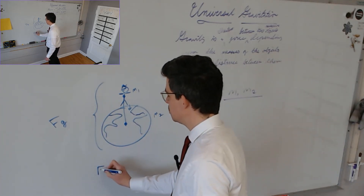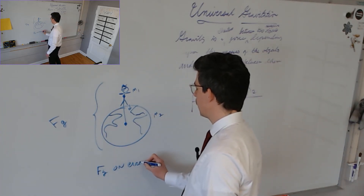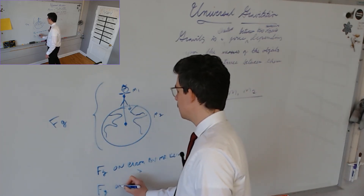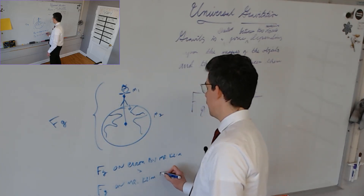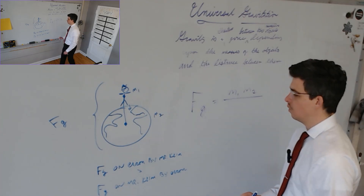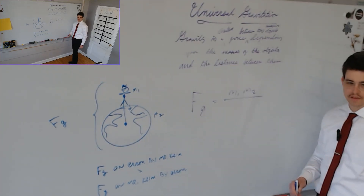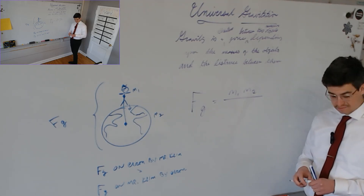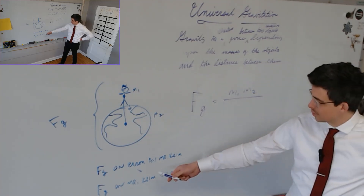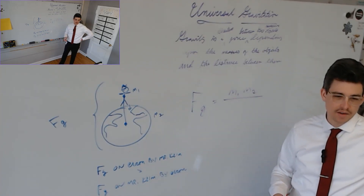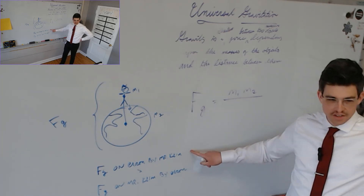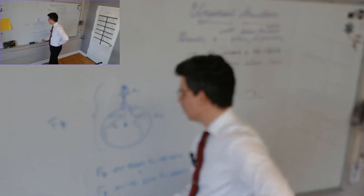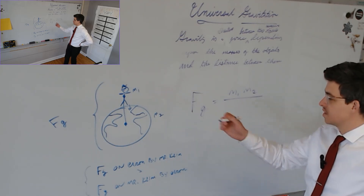So F sub G on Earth by Mr. Kime is equal to F sub G on Mr. Kime by Earth. What does this kind of remind you of? Which of Newton's laws does this remind you of? For every action, there's an equal and opposite reaction. This is Newton's third law, at least in the context of gravity.